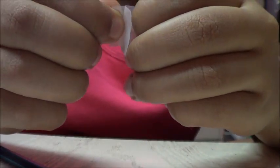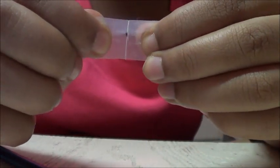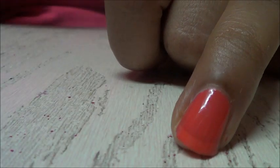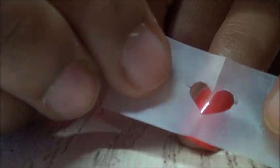Now open the folds of the scotch tape and see a perfect symmetrical heart. Now stick your heart onto your nail in the center.